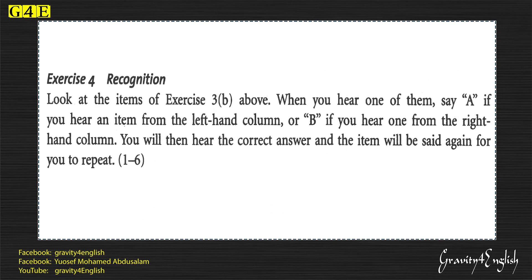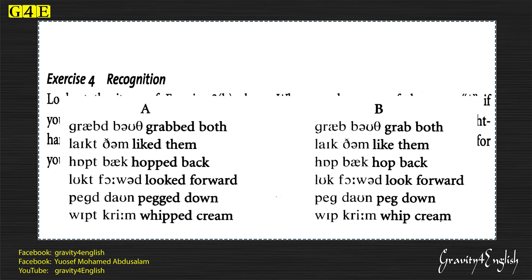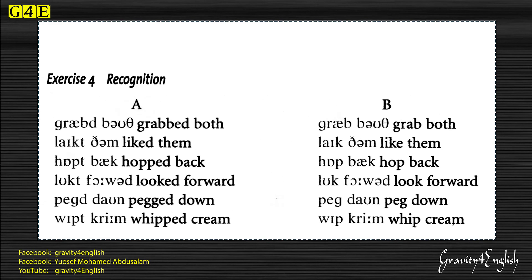Exercise 4: Recognition. Look at the items of Exercise 3B above. When you hear one of them, say A if you hear an item from the left-hand column, or B if you hear one from the right-hand column. You will then hear the correct answer, and the item will be said again for you to repeat.